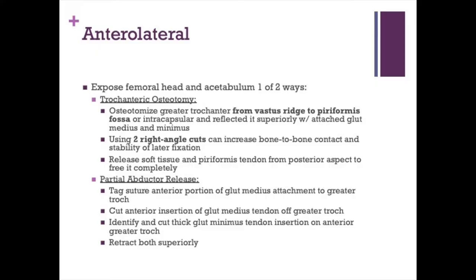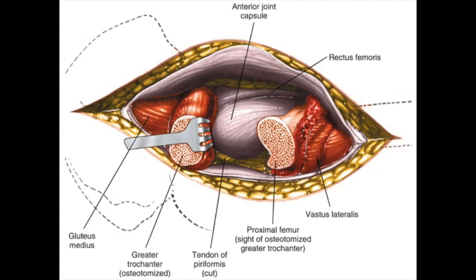You can expose the femoral head and acetabulum in one of two ways: either perform a trochanteric osteotomy with later fixation and flip the gluteus medius up, or do a partial abductor release where you release a small portion of the gluteus medius if it can't be fully retracted. Here's an example of the trochanteric osteotomy that gains full exposure to the acetabulum.